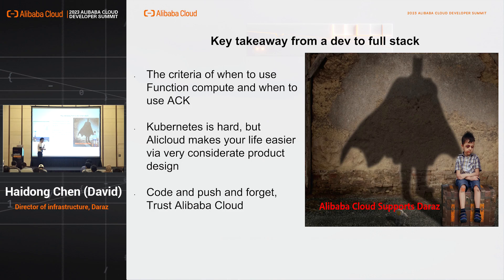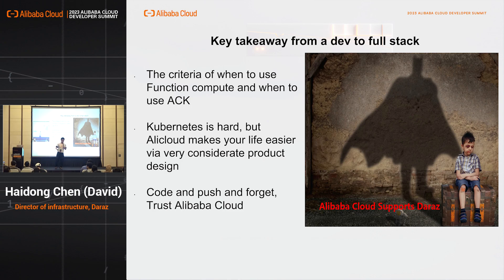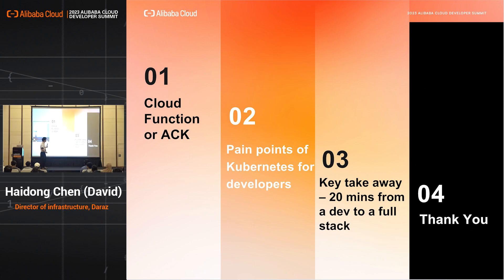Our target is simple: code, push, and forget. Trust the rest to the Alibaba Cloud platform. Just focus on the code, the business logic, and the business growth — that's how we help developers and businesses grow. This picture means a lot to me: I grew up in a simple environment, sitting on boxes instead of chairs. But with the support of the cloud community and Alibaba Cloud, our 10-person team is now able to support 2.5 billion concurrency in a live stream.